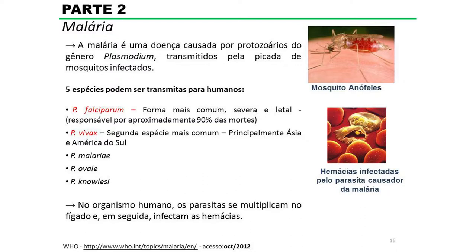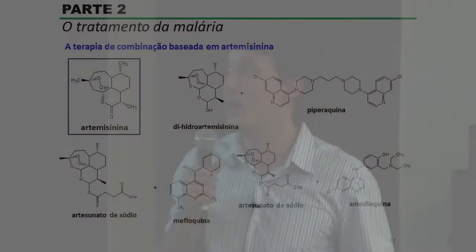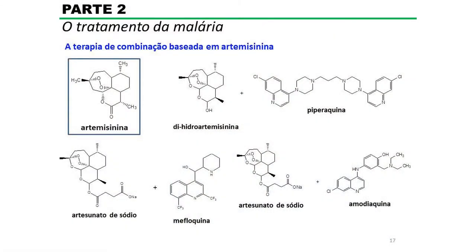No organismo humano, os parasitas se multiplicam no fígado e, em seguida, infectam as hemácias. Atualmente, o tratamento da malária é baseado na utilização de derivados da artemisinina, um terpeno extraído de plantas do gênero Artemisia, principalmente Artemisia annua. São utilizados derivados como a di-hidroartemisinina e o artesunato, sempre em combinação — nunca um derivado da artemisinina sozinho, para evitar o desenvolvimento de resistência por parte do parasita.